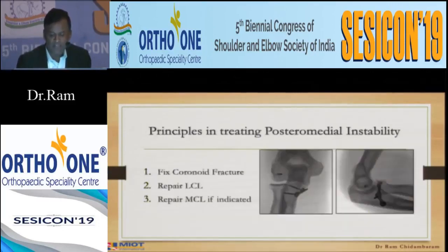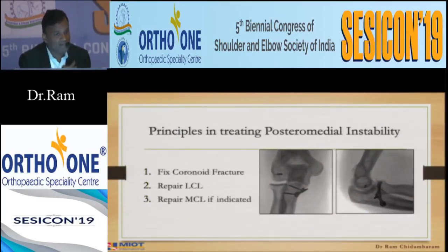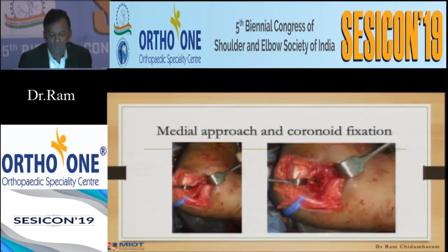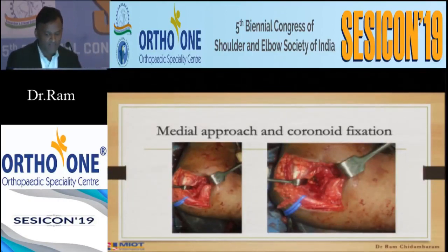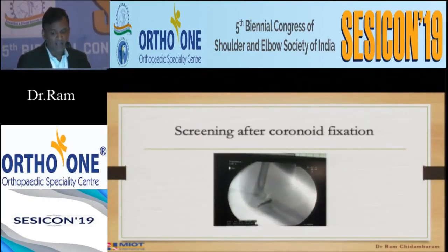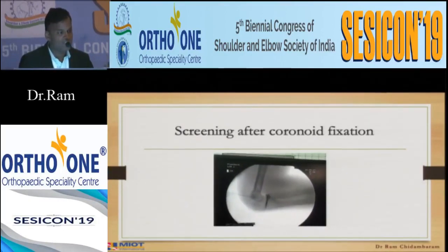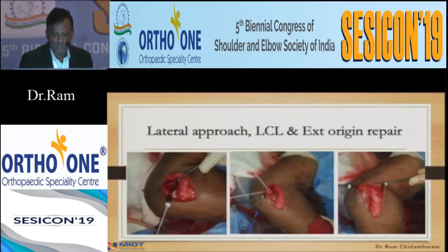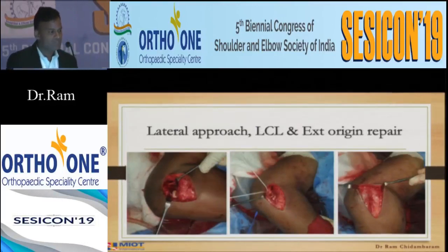The treatment line here is: first, fix the coronoid; second, repair the lateral collateral ligament; third, repair the medial collateral ligament if the elbow is still unstable. I approached medially first and fixed the coronoid with a plate and screw using the hand system plate. The fluoroscopy screening after coronoid fixation shows how much stability that gives, because here the problem is the coronoid. I then proceeded with a lateral approach — the collateral ligament and extensor origin were torn — and I repaired those as well.